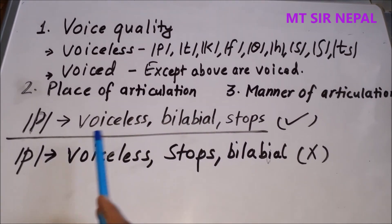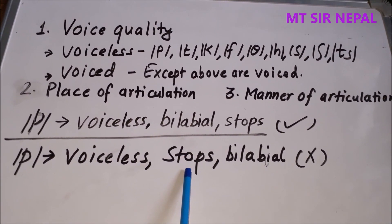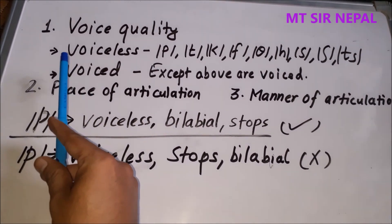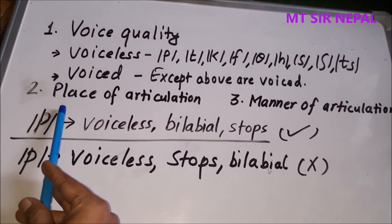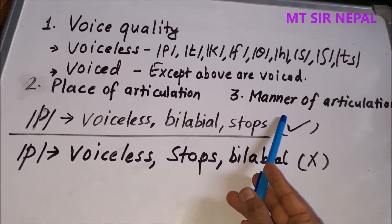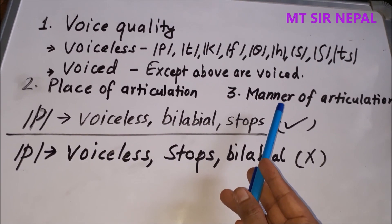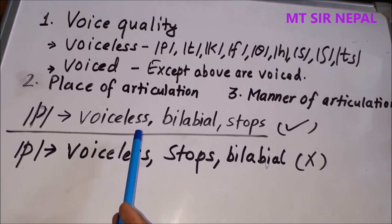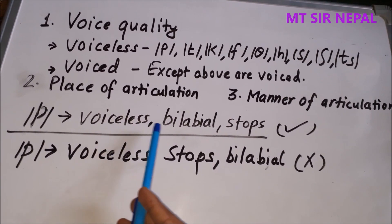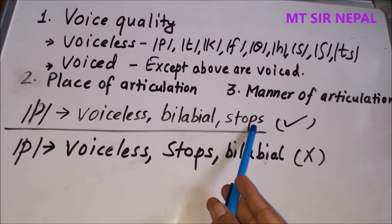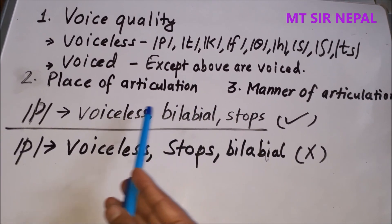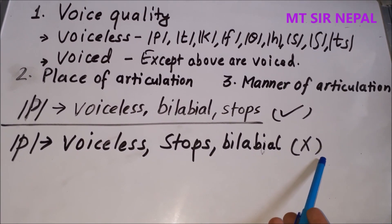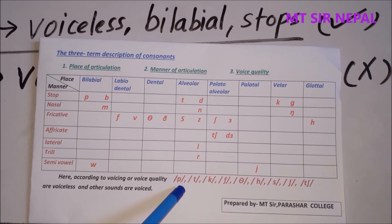Now, what would happen if we wrote the /p/ sound as voiceless, then bilabial, then manner of articulation? That would be wrong because the correct system is: first voice quality, then place of articulation, then manner of articulation. In any exam — long question or short question — we must follow this order. If you write voiceless or voiced, then manner of articulation, then place of articulation, it will be wrong.